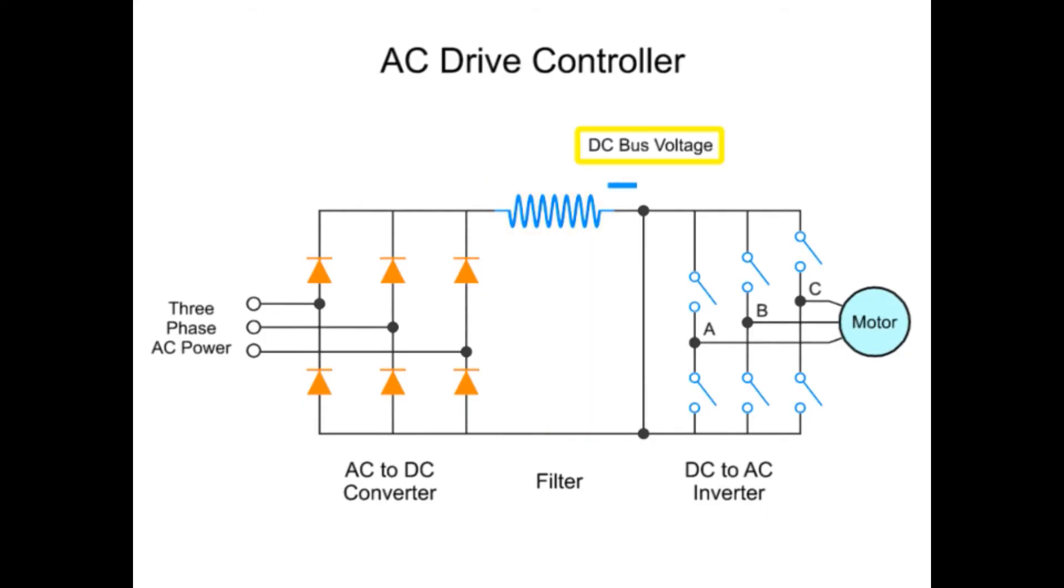The filtered DC bus voltage then passes through to the inverter. At the inverter, an array of fast-acting switches convert the DC bus voltage into pulses at a constant magnitude that are proportional to the DC bus voltage.